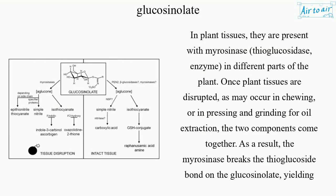In plant tissues, they are present with myrosinase — a thioglucosidase enzyme — in different parts of the plant. Once plant tissues are disrupted, as may occur in chewing or in pressing and grinding for oil extraction, the two components come together.